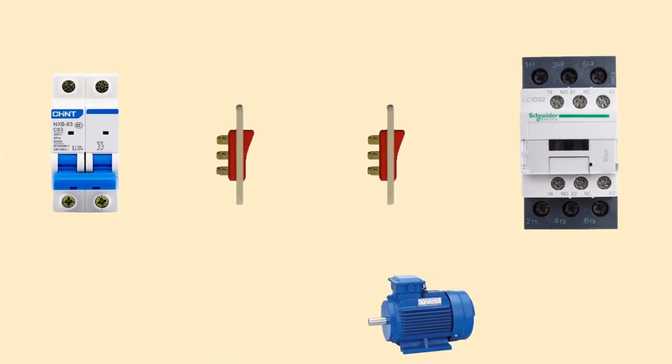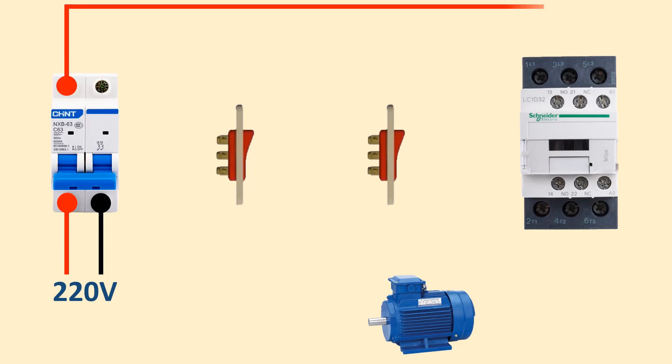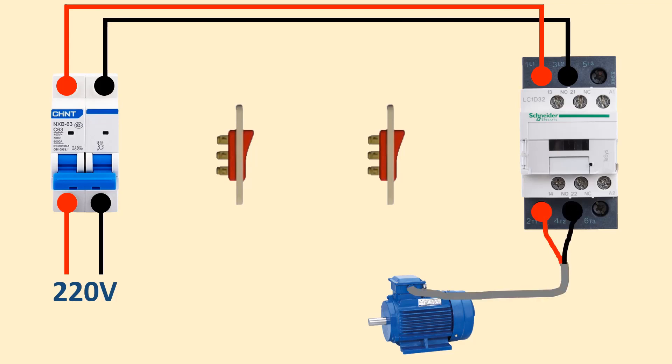Now we will do power wiring first. Input your 220V line to the MCB input point, MCB output to contactor input, and connect the contactor output to your motor wire. And the power wiring is complete.